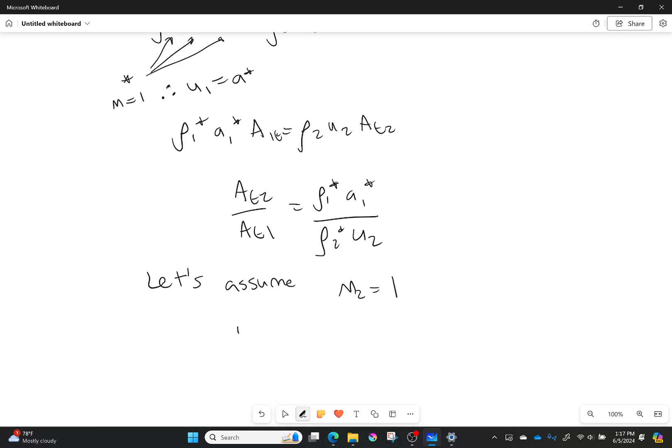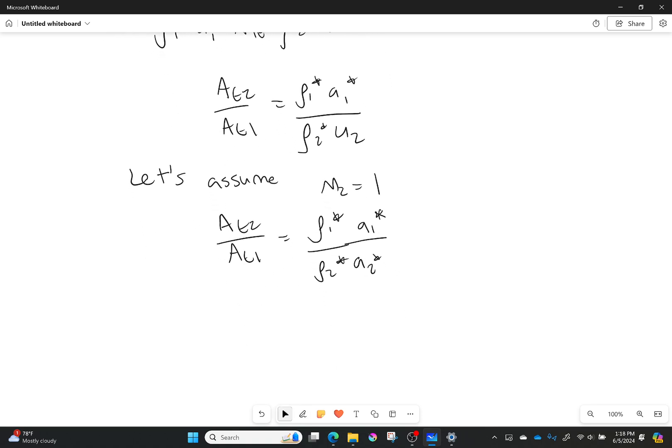Well, if that's the case, that lets me say that area throat 2 over area throat 1 is equal to density 1 star over density 2 star, and I have A2 star and A1 star. Beautiful.